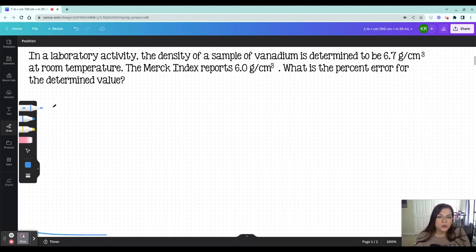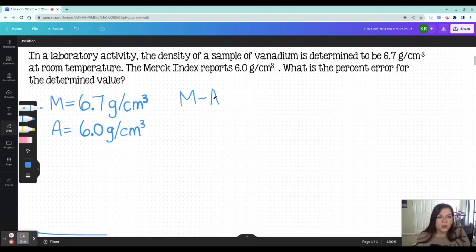I am going to sketch this out, write it. This is what I like to do. The measured value in this case is 6.7 grams per cubic centimeter. I know this because it says in a lab activity, the density is determined. That means whatever comes next is the measured value. So that's 6.7 grams per cubic centimeter. And the accepted value is what's going to be reported in the Merck index, and that is saying 6.0 grams per cubic centimeter. So that is what all of our collection of scientific data tells us. So I'm going to pop this into the equation to figure out how far off we are.